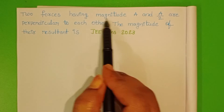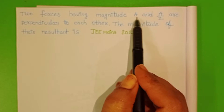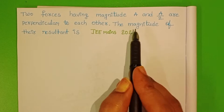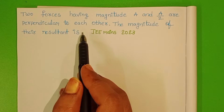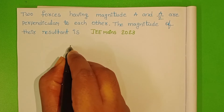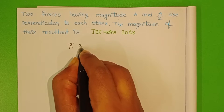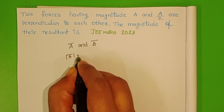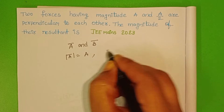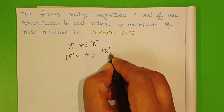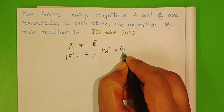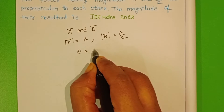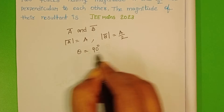Two forces having magnitudes A and A/2 are perpendicular to each other. The magnitude of the resultant is? Let us take two vectors A bar and B bar. The magnitude of the first vector is A and the magnitude of the second vector is A/2. These two vectors are perpendicular to each other, so the angle between the two vectors is 90 degrees.